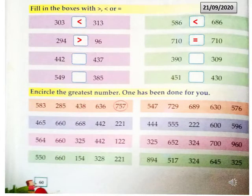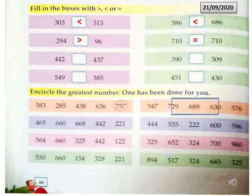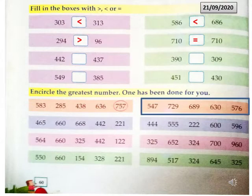After this, read question 2 and circle the greatest number — the first one has been done for you. See the second part. The numbers are 547, 729, 689, 630, and 576.